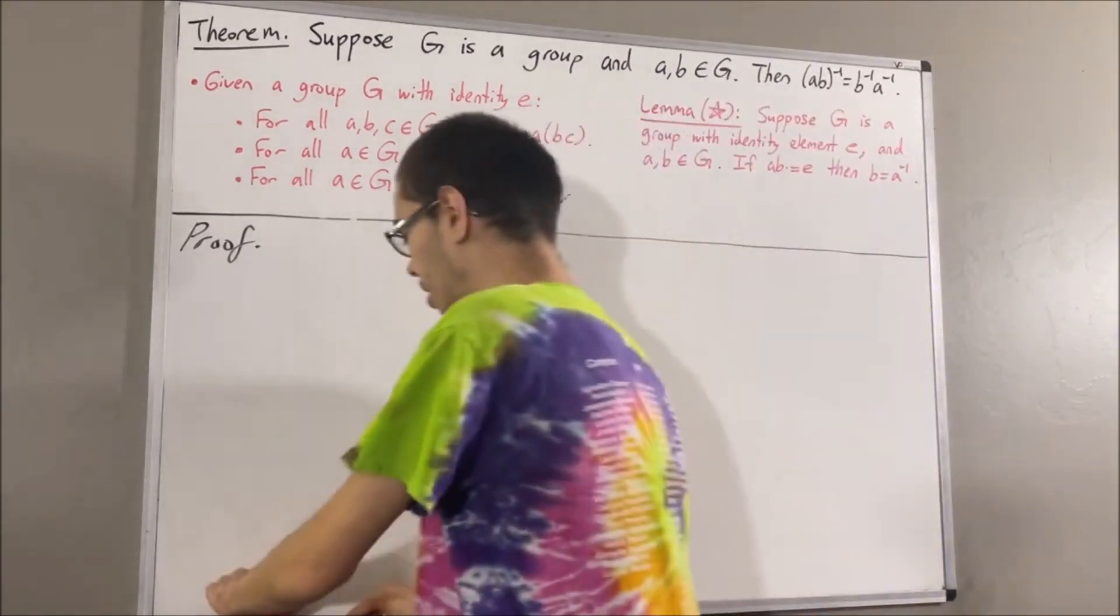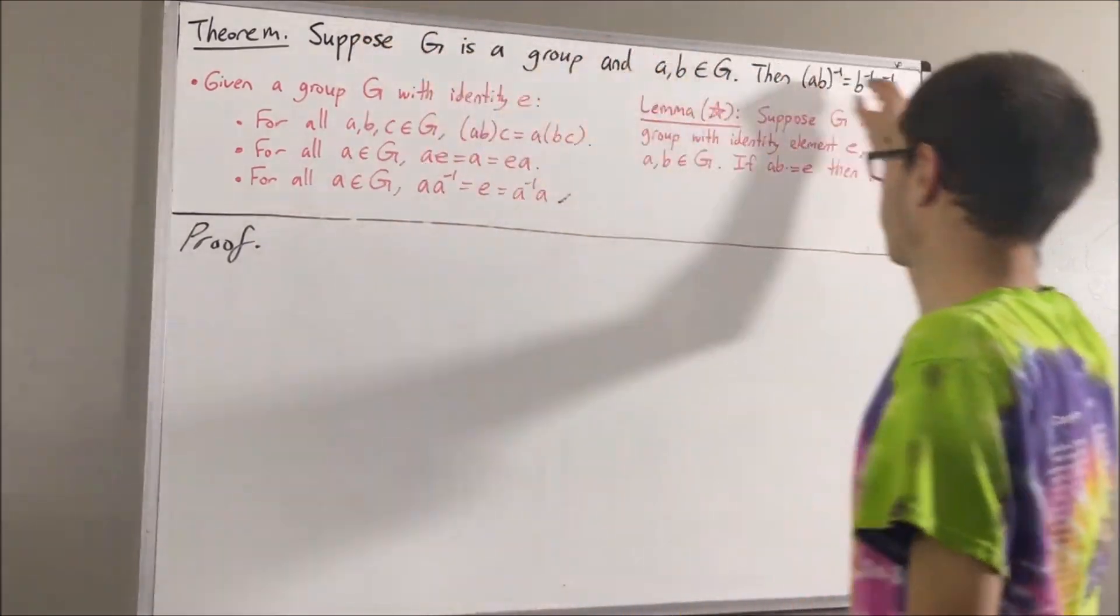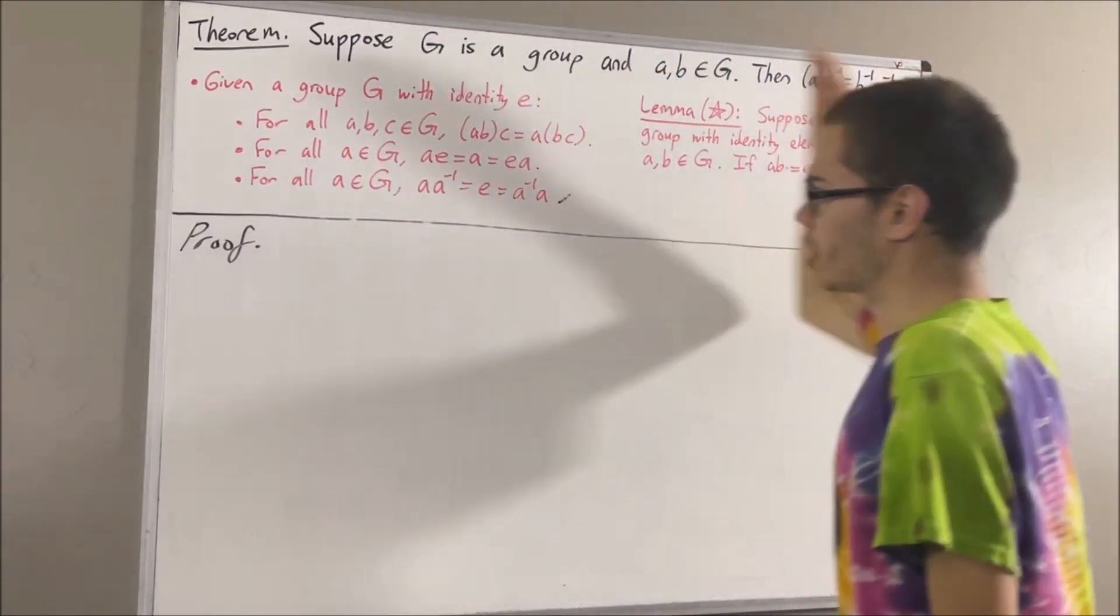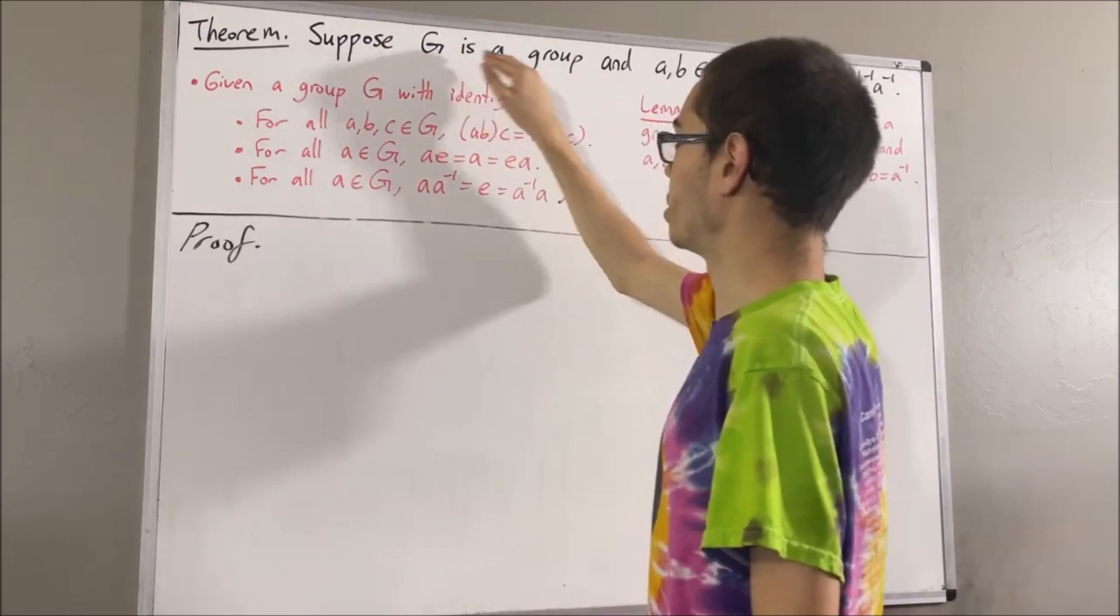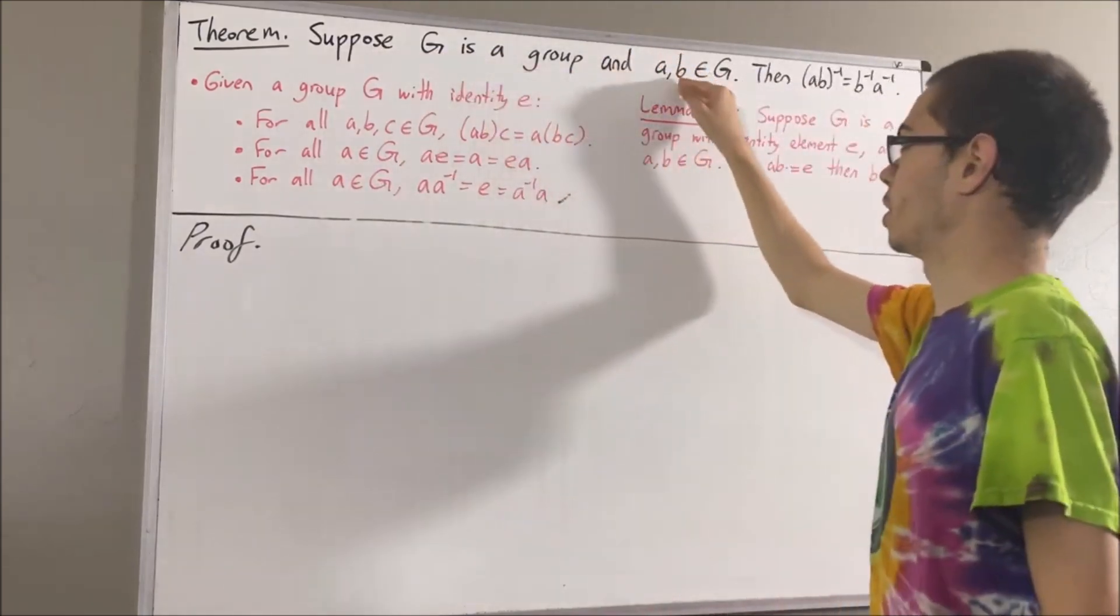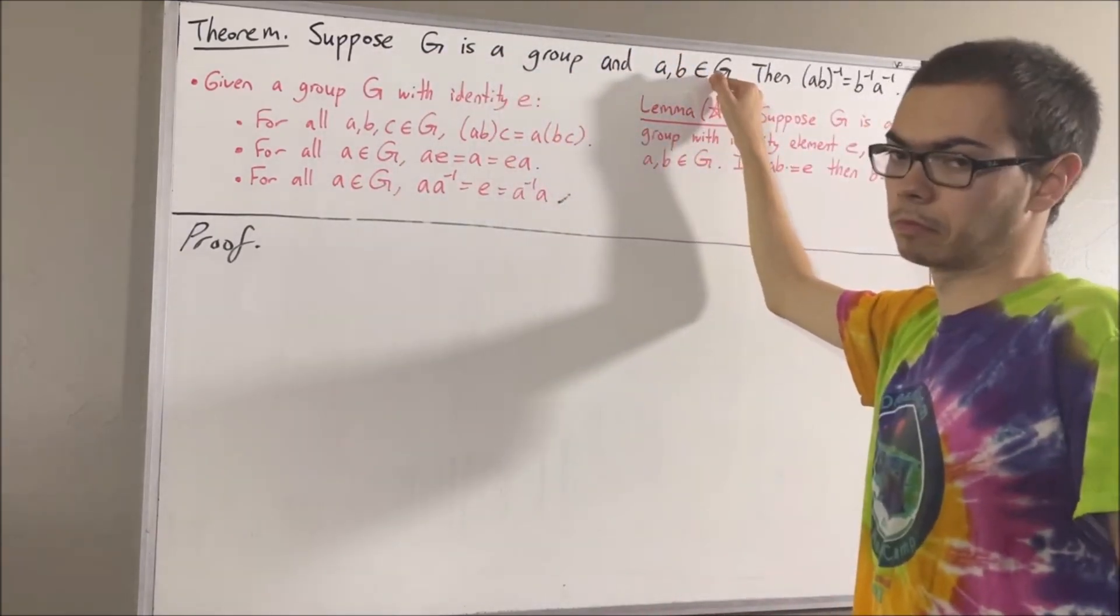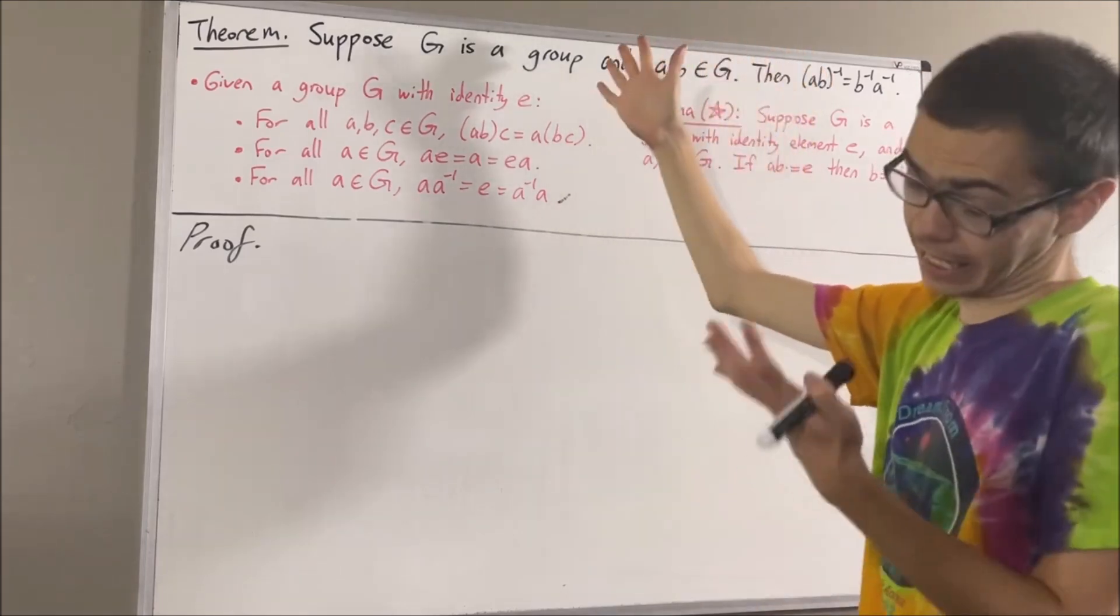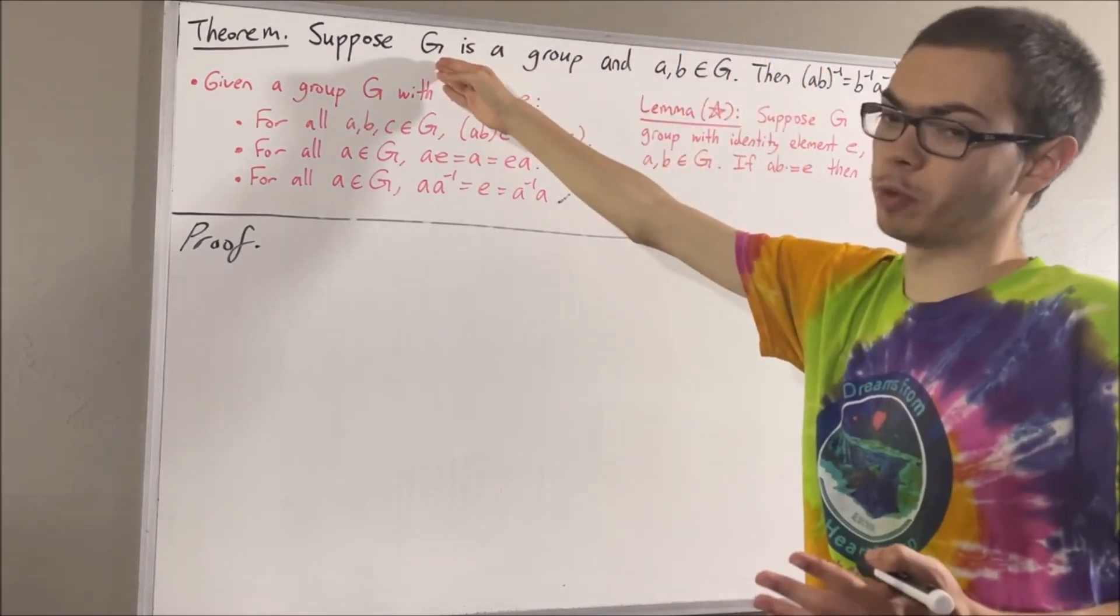So now, let's get into proving this theorem. In proving this theorem, we are given a group G, and we're given A and B are two elements of G. Let's also just suppose that E is the identity of this group G.